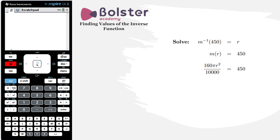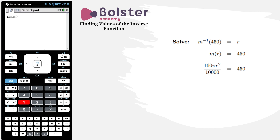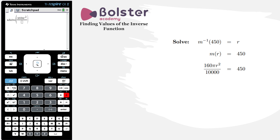We go into the scratchpad, hit menu, select the algebra option number three, and hit numerical solve, option number one. Up pops nSolve, and we type in the equation: 160 times pi, then times r squared, divided by 10,000 — using control and divide to get fraction notation — then set this equal to 450. Once the equation is entered, we hit a comma and tell the calculator what variable we want to solve for, which is r.